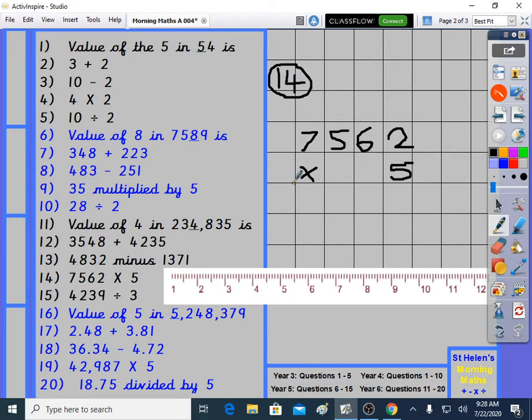Question 14. 7,562 times 5. I'll use the standard method for this. 5 times 2 is 10. 5 times 6 is 30, plus 1, 31. 5 times 5 is 25, plus 3, 28. And 5 times 7 is 35, plus 2, 37. So we get 37,810.